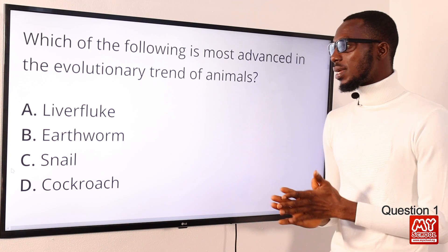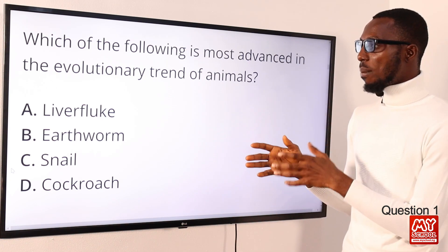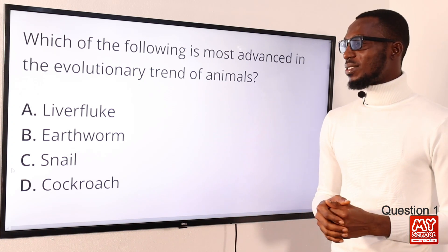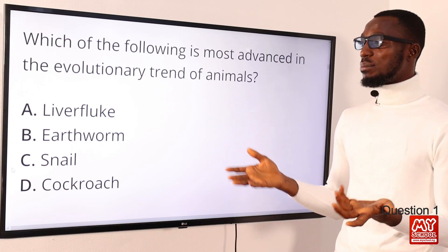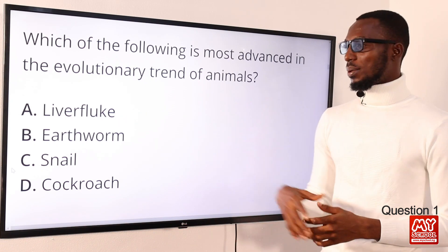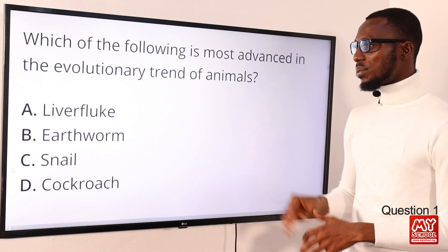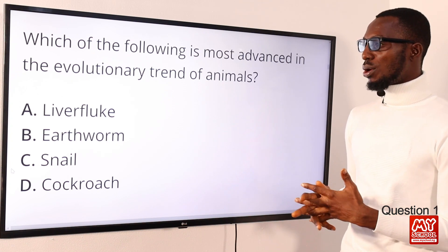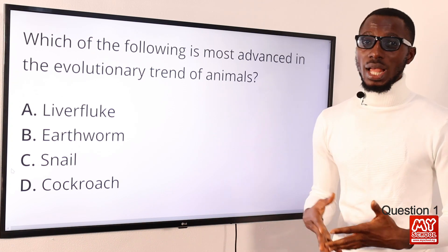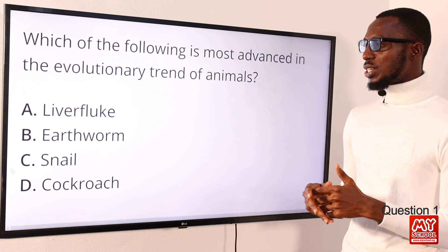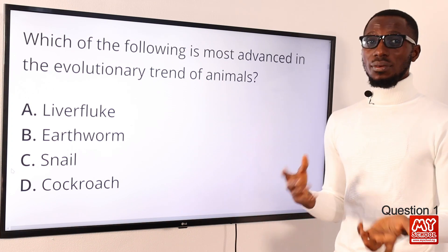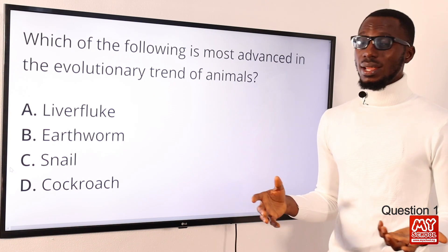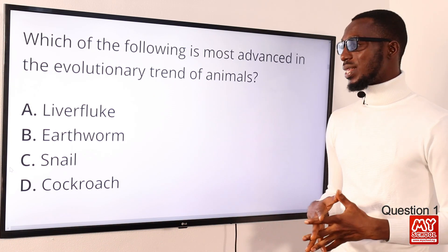Next, we are talking about earthworm. Earthworm belongs to the phylum Annelida. They have a true body cavity, compared to the previous option. Now let's look at snails — snails belong to the phylum Mollusca. They show a more advanced kind of system, and a number of them are marine in nature, that is, aquatic habitat.